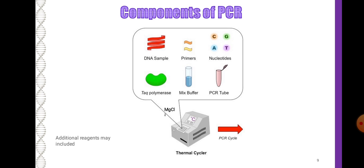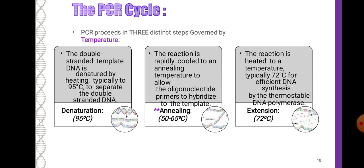Components of PCR include: DNA sample, primers, nucleotides, polymerase mix, buffer, and a PCR tube. PCR proceeds in three distinct steps controlled by temperature. The first is denaturation at 95 degrees Celsius, the second is annealing at 50 to 65 degrees Celsius, and the third is extension at 72 degrees Celsius.